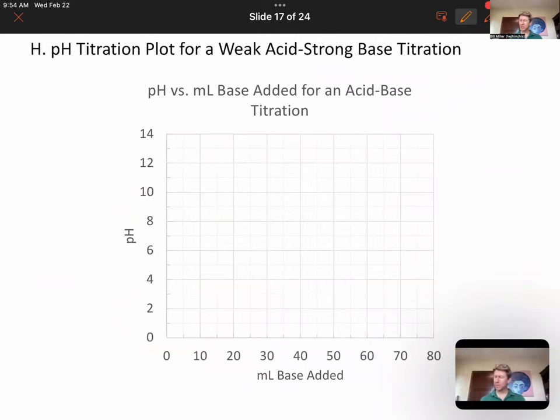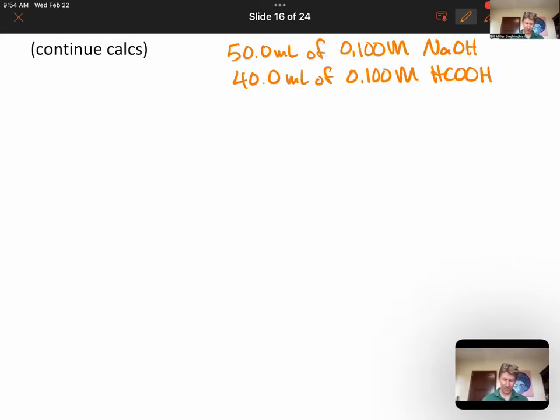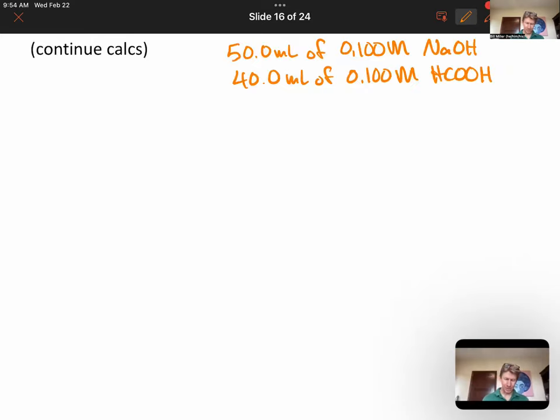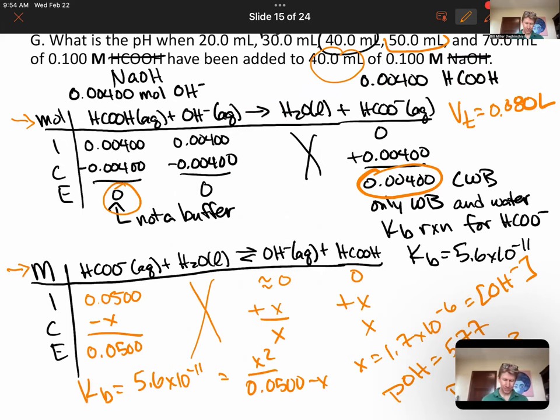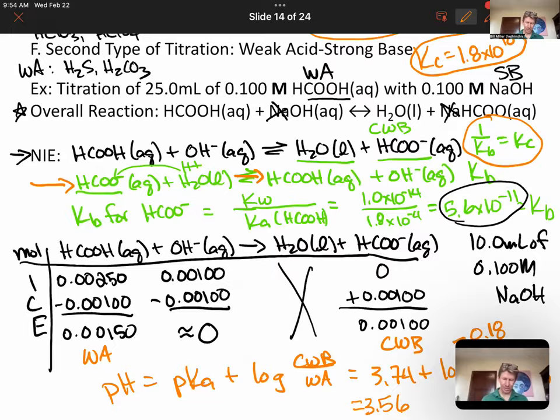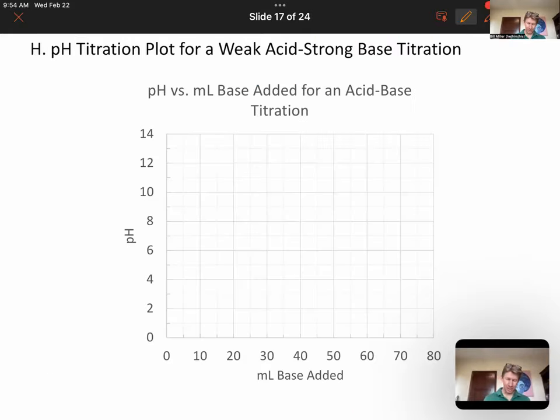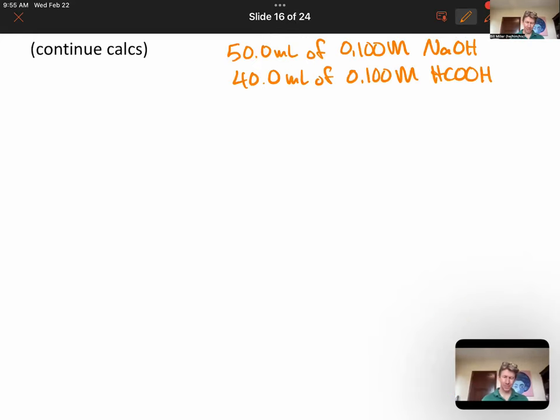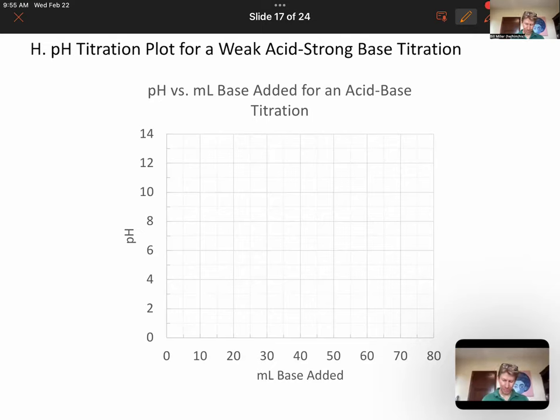But for now, let's move on and do a pH titration plot for a weak acid, strong base titration. This is going to be the titration in general. It's going to be the same titration for these calculations right here. And if we do that, we know that at 40 milliliters, which is our equivalence point, we're going to have a pH of 8.23 right there.